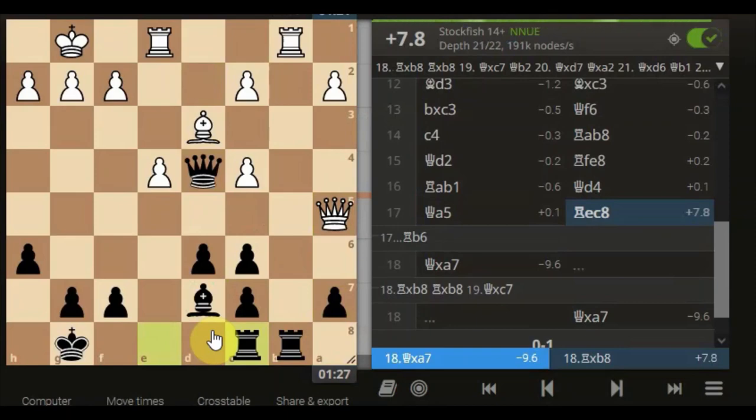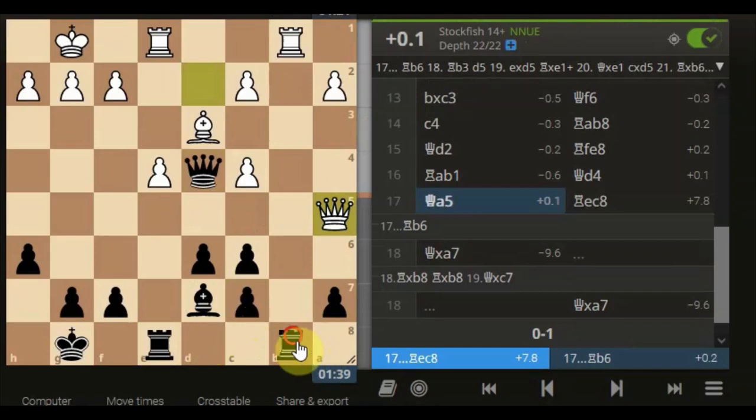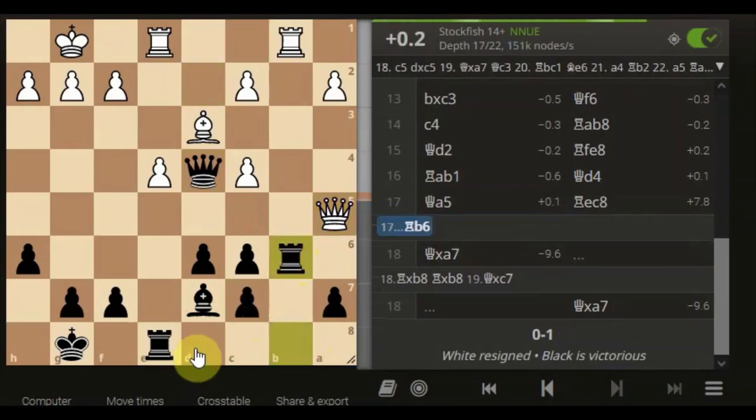Either way, a better position would have been the rook coming here, blocking. That's nothing major but it prevents the bishop and the rook from being taken by the queen.